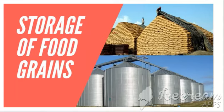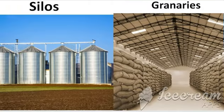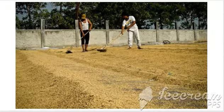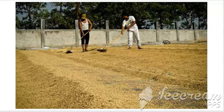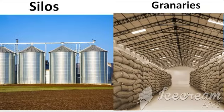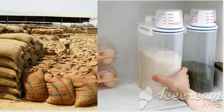The next process is storage. The harvested grains are stored in granaries and silos. Before storing, they have to be sun-dried to remove the moisture present in the grains. After sun-drying, they are stored in silos and granaries for large quantities, and if it is a small quantity, they can be stored in gunny bags and tins.